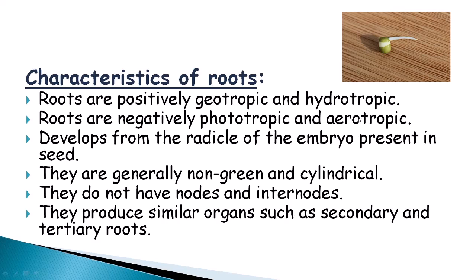Roots are developed from the radicle of the embryo present in the seed. When the seed germinates, the first part of the embryo that comes out is the radicle, and it is the first organ which forms the root.